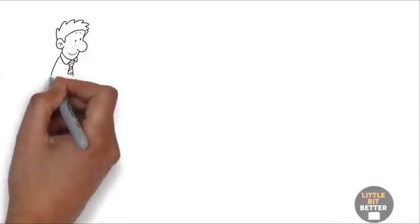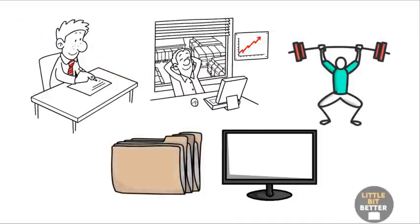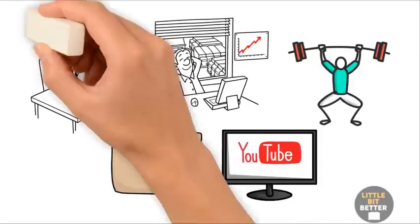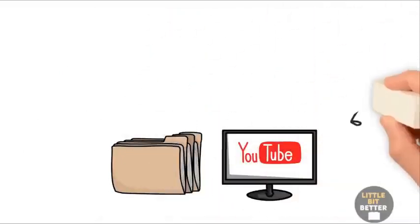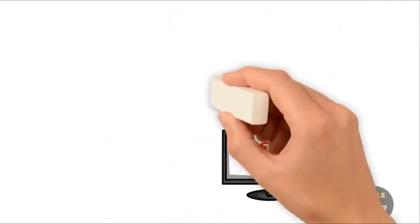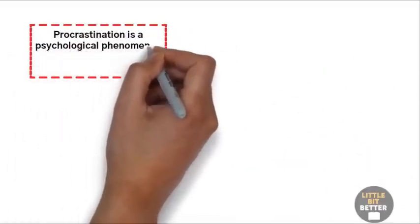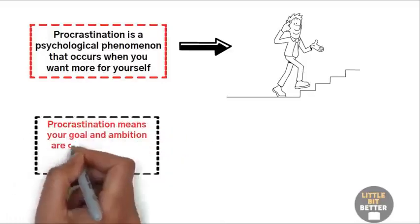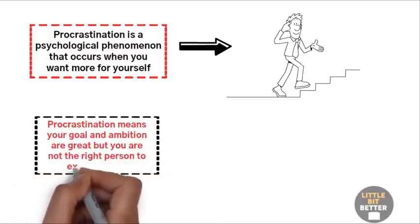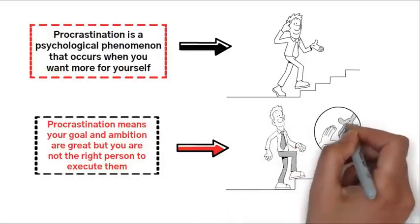For example, it's been years since you wanted to write a book, start a business, get in shape, get rid of those annoying tasks, or start a YouTube channel. But somehow, these goals never get materialized. They're always in the corner of your mind, but somehow you never work on them. Instead, you procrastinate. Procrastination is a psychological phenomenon that occurs when you want more for yourself, but don't have the knowledge and capability to do it. Procrastination means your goal and ambition are great, but you're not the right person to execute them. Procrastination means you need help. You need to involve who's.